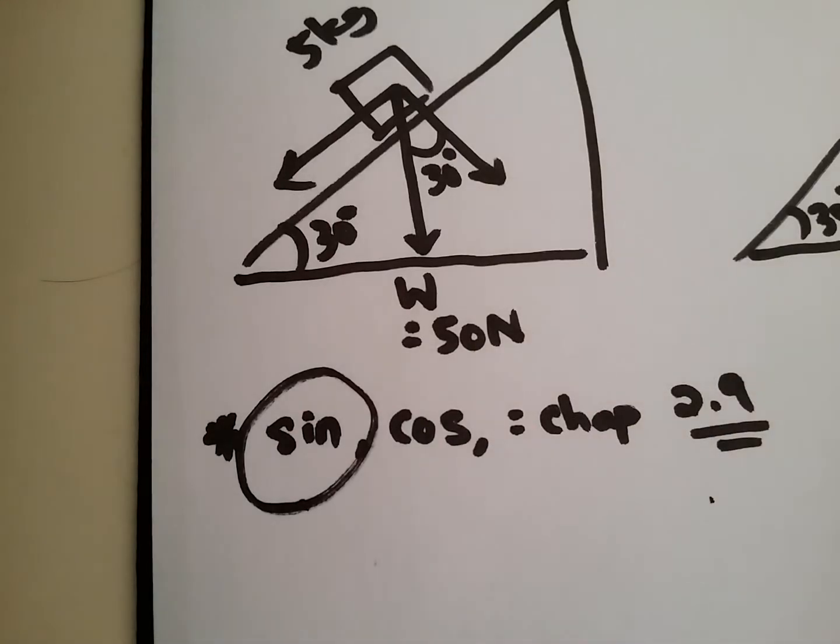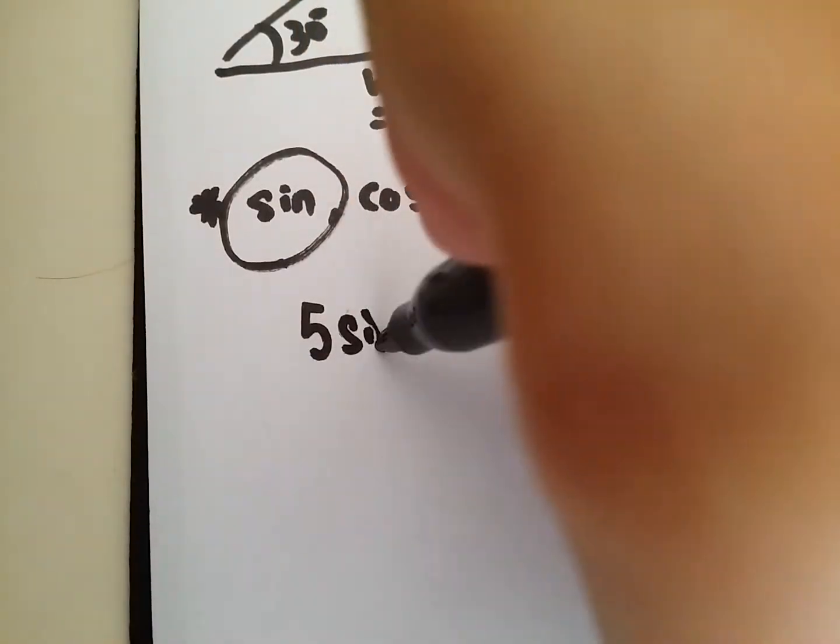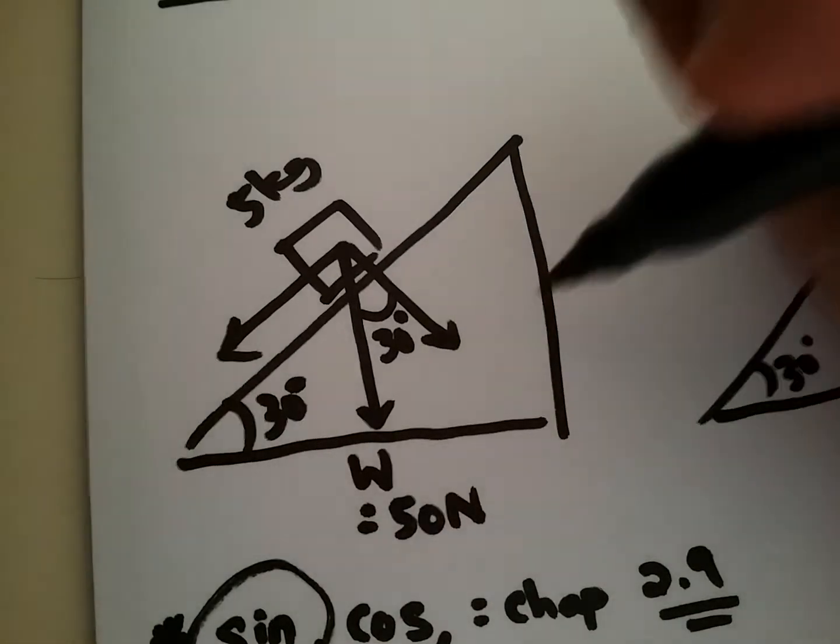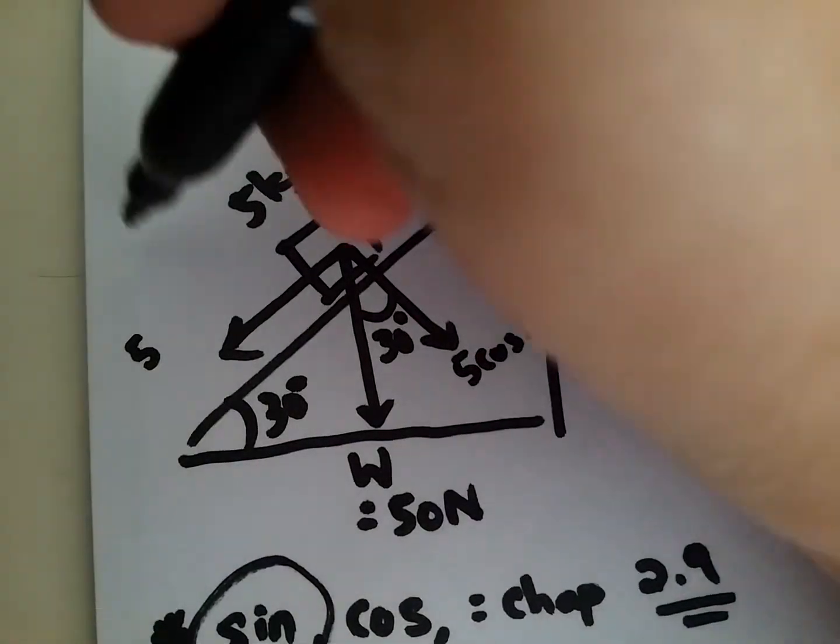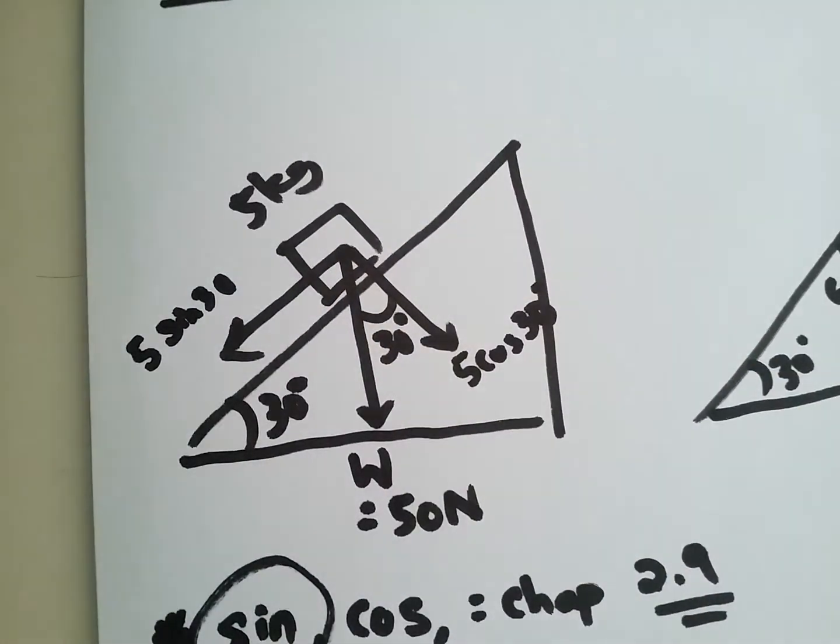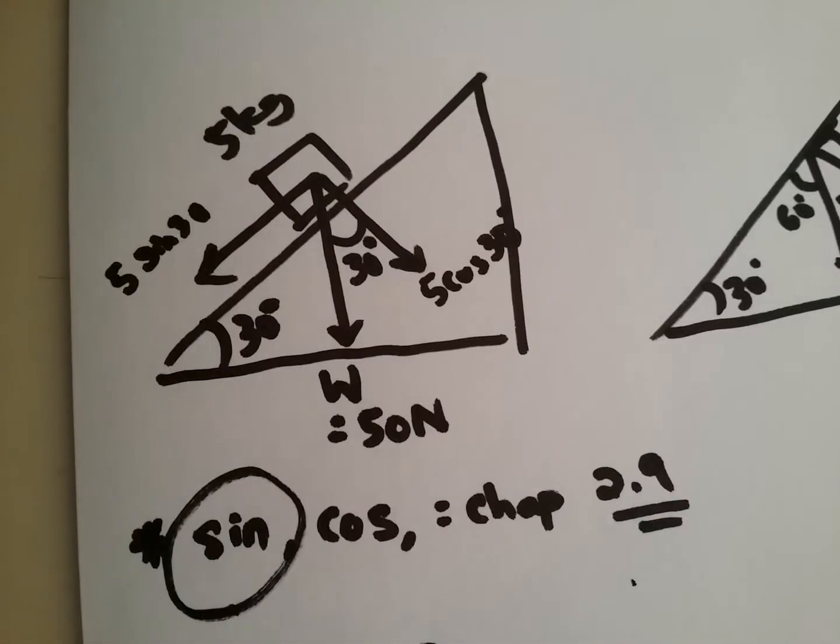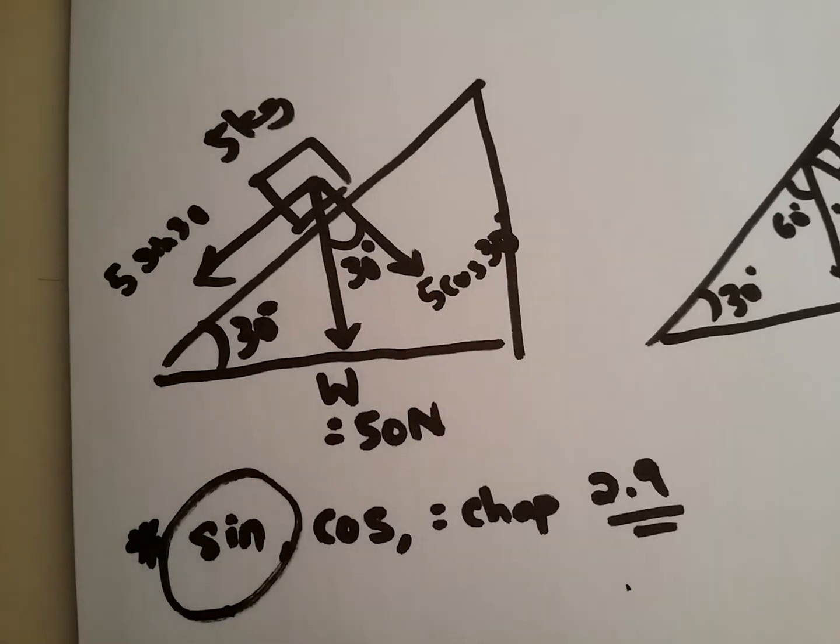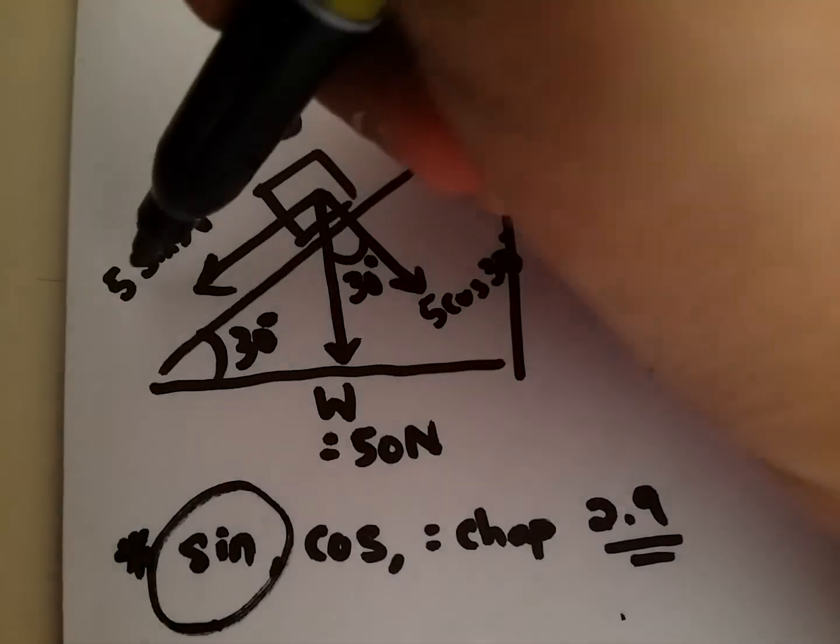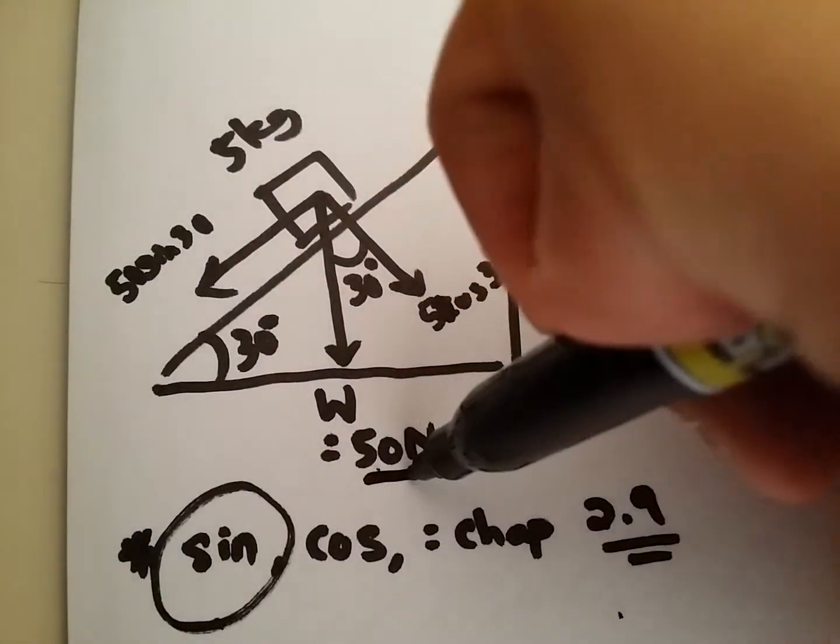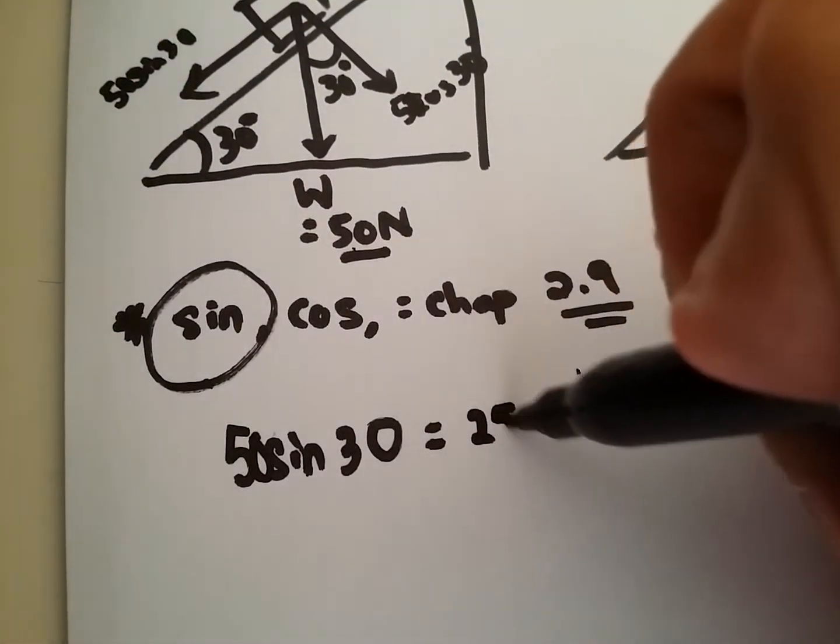So therefore, how we are going to calculate this is, we can actually make it 5 sine 30, as this is actually 5 cos 30. This is actually 5 sine 30. So, angle adjacent, angle opposite. By looking at this, you will see that the force that we actually want to use is 5 sine 30. Sorry, 50 sine 30, because we need to use the weight force. So therefore, this should be 50 sine 30, which gives rise to 25 newton.